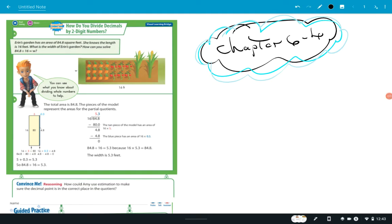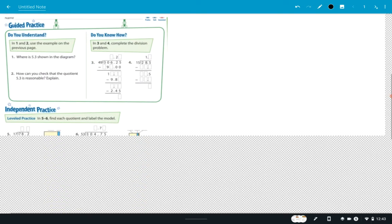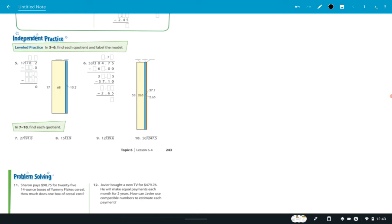Okay, fifth graders, happy Friday. We are doing chapter six, section four. So if you haven't opened your books to that page, go ahead and do so. I'm not sure what page it is. Let me see here. So it looks like we're going to start on page 242.